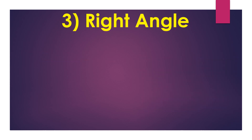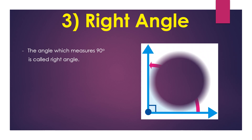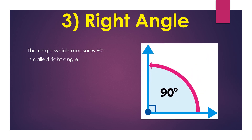Right angle. The angle which measures 90 degrees is called a right angle. The figure shown beside is an angle of 90 degrees, so it is a right angle.